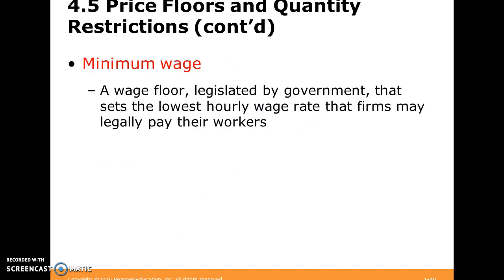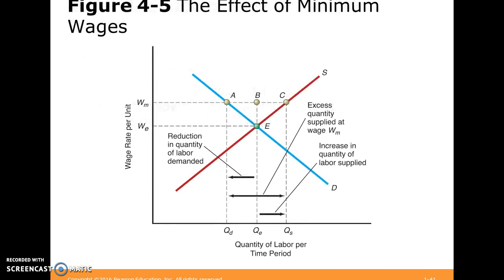The other archetypal case of a price floor is a minimum wage — the lowest amount you can pay an employee per hour. Here's a graph explaining it: WE is our equilibrium wage and QE is our equilibrium quantity. Suppose we have a minimum wage WM — at this higher wage, there are QD demanded by firms and QS supplied by laborers. The distance between them represents our surplus of labor, or unemployment.